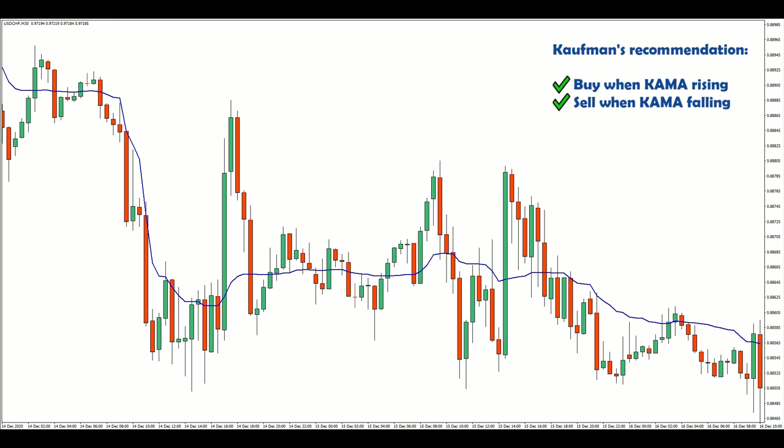Obviously, these rules are extremely relaxed and will produce a large number of false signals even for the most trending of markets. Even in its least responsive state, the KAMA exhibits frequent direction changes. Nonetheless, let's use the above rules as a starting point and try to build a tradable strategy for the 30-minute dollar franc.